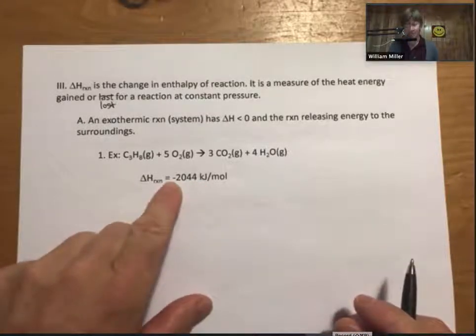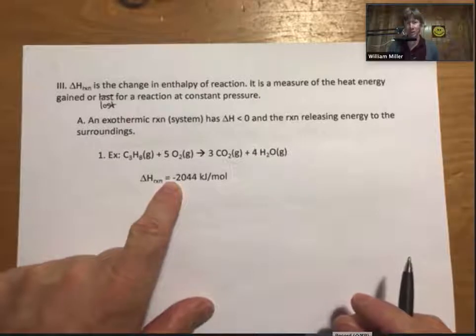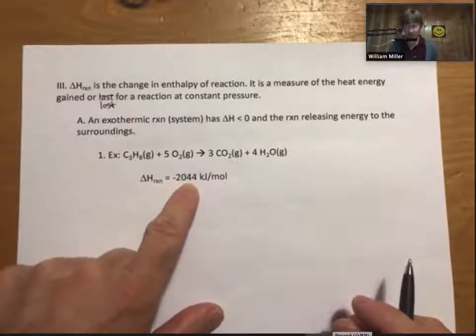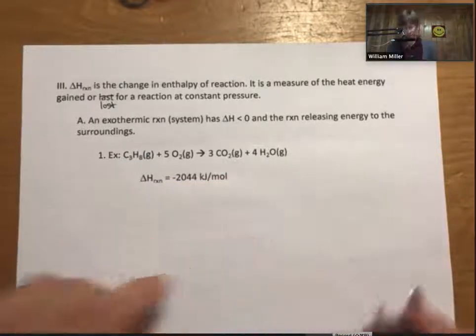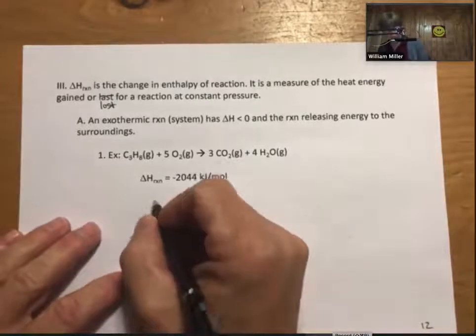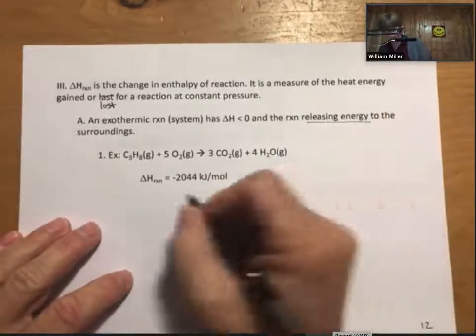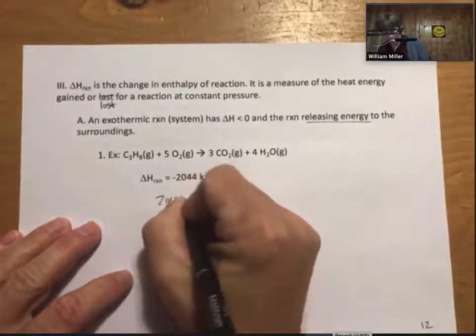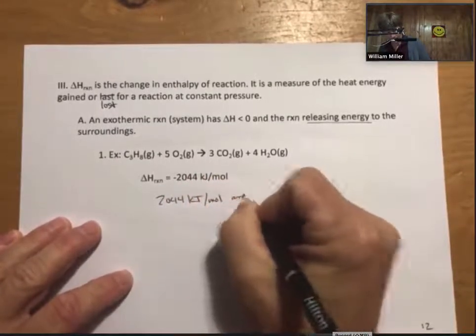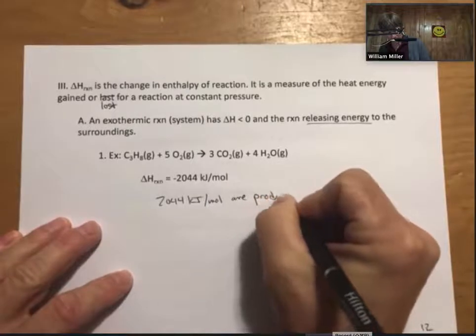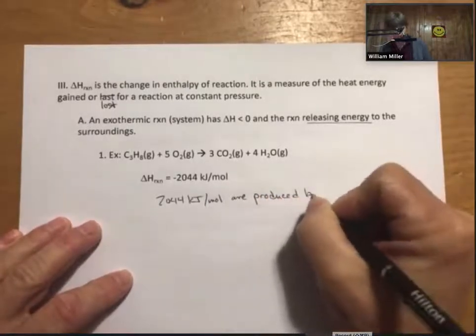So the minus sign means that this is an exothermic reaction. And our way of thinking about that is, this is the amount of energy per mole that is produced. So that's what it means when it's releasing energy. So 2,044 kilojoules per mole are produced by this reaction.